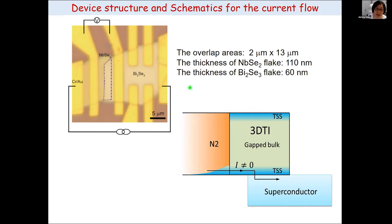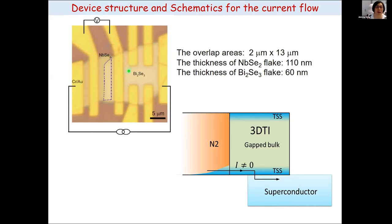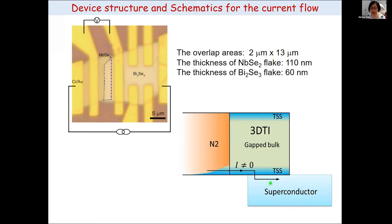Through a dry transfer technique we build a junction. In this device, the niobium diselenide flake is at the bottom and the bismuth selenide flake is on top; the overlapping area is highlighted by a purple dashed rectangle. If we look at the cross section, the device structure is: when the temperature is below the niobium diselenide Tc, we have a superconductor at the bottom and a 3D topological insulator on top, so the proximity effect can induce superconductivity in both the surface state and the bulk state.